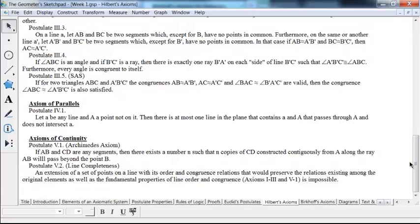When we throw in this version of the axiom of parallels, actually it's a slightly weaker version of the thing that I said with the Playfair version, if let A be any line and capital A be a point not on it, then there is at most one line in the plane that contains the line A and A that passes through A and does not intersect A. So there's at most one parallel line. From this we can actually prove that there's exactly one parallel line.